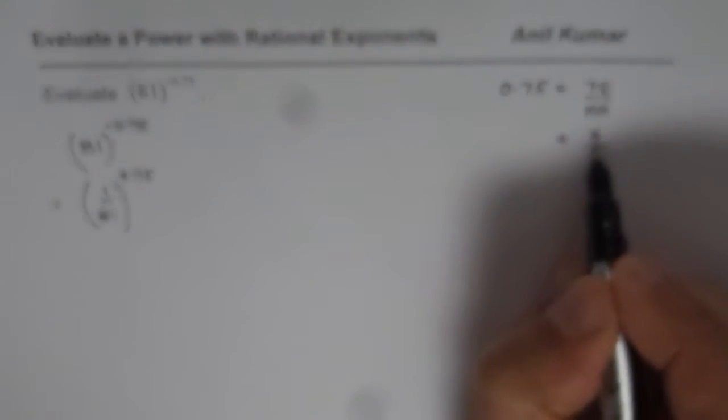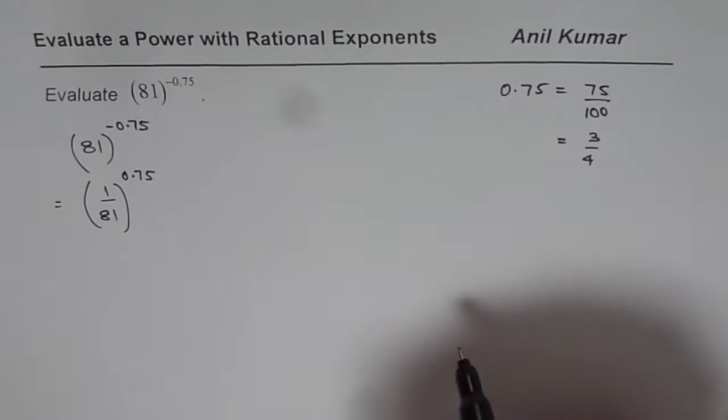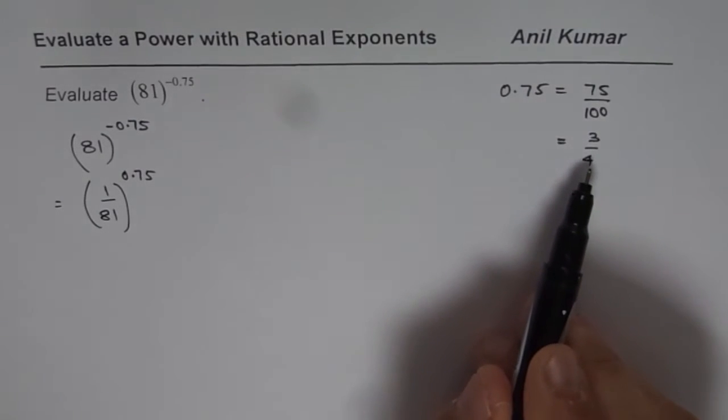Now let us understand what is 0.75 equals to. We can convert that to fractions. So I could write this as 75 over 100, and then simplify this, dividing by 25 we get 3 over 4. Now it becomes a rational exponent and kind of easier for us to understand.